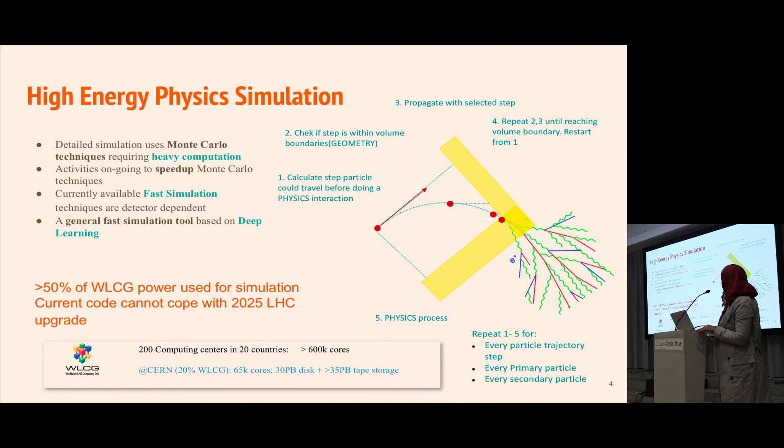High energy physics simulation is a very time-consuming process involving heavy computation. It is based on the Monte Carlo technique, which means that at every step a particle travels, we have to evaluate the next step by drawing a random number from a distribution and checking how much distance this particle will travel before it undergoes a physics process.